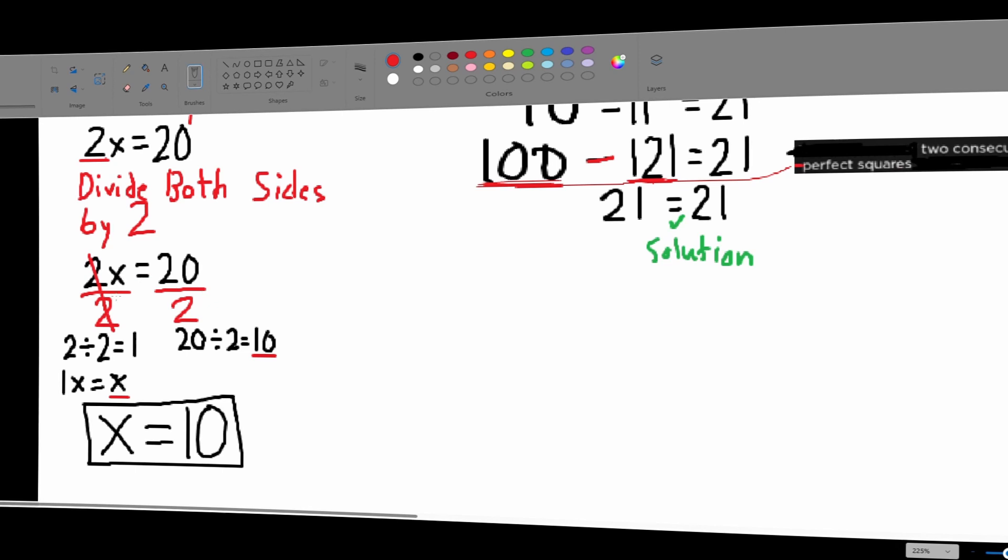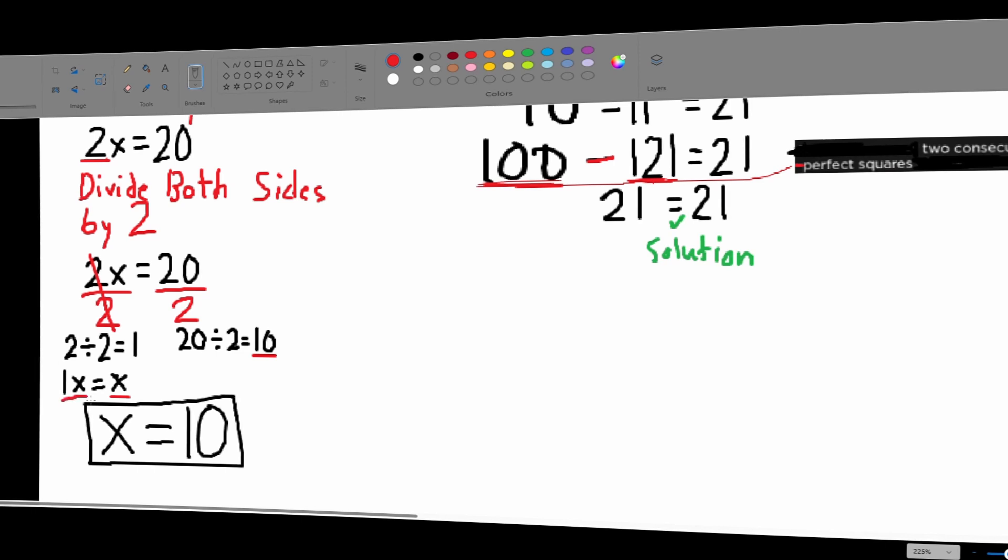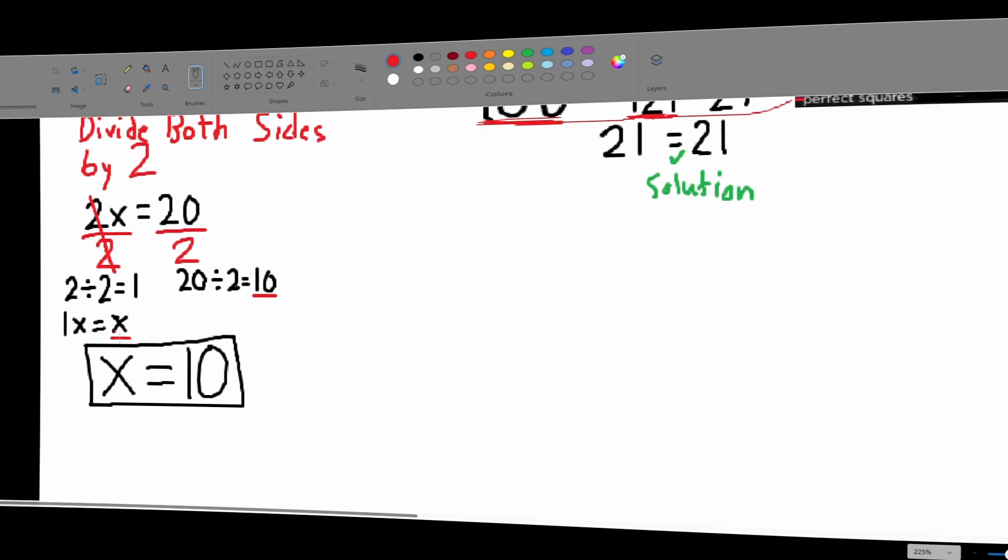2x equals 20. And then we divide both sides by 2. 2 divided by 2 is 1. And when you remember, the 1 in x is hidden. It's there, but it's hidden. So, we cancel those. 20 divided by 2 is simple. 20 divided by 2 is 10. So, we end up with x equals 10.